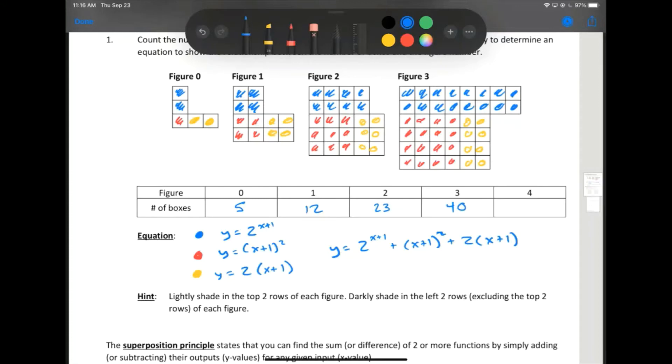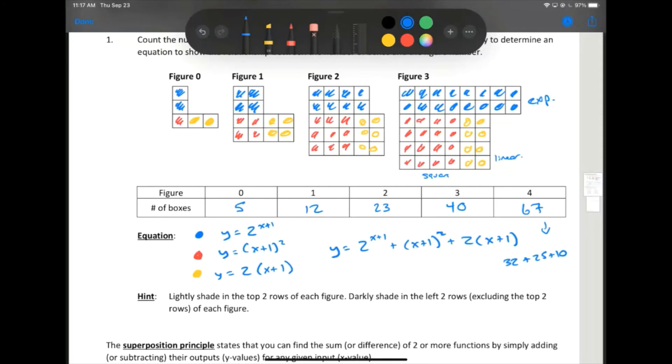That's often the case with composite functions - it is often very hard to see the patterns until things are broken down at least a little bit into their pieces. Now we can go back and figure out how many boxes there should be on our fourth one. That would be 2 to the 5 is 32, and 4 plus 1 squared would be 25 boxes, and 2 times x plus 1 would be 2 times 5 is 10. So we get 67 would be in our fourth pattern if we were to draw it.